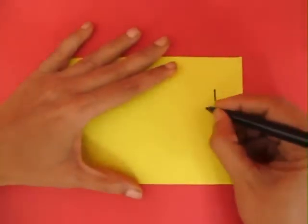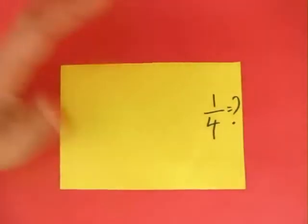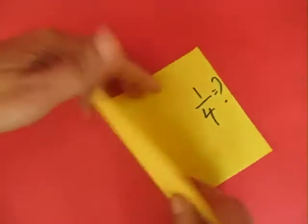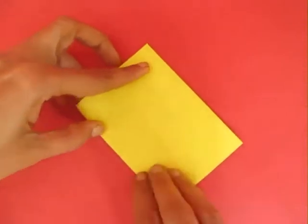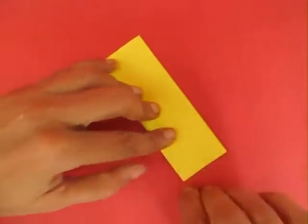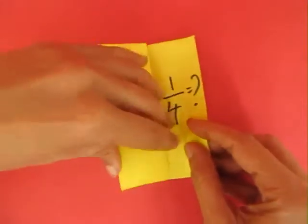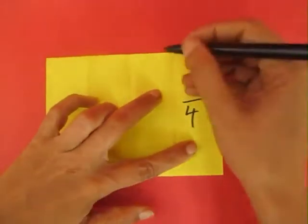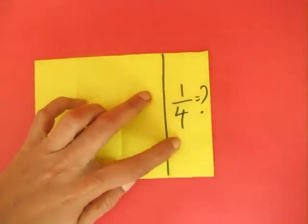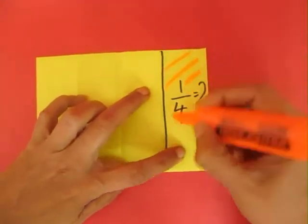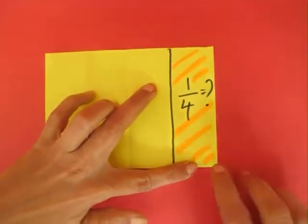Given a piece of paper, how do you depict 1 quarter? You fold the paper first into half, then into a quarter, then open it up, draw all the 4 quarter lines and one section would be 1 quarter.